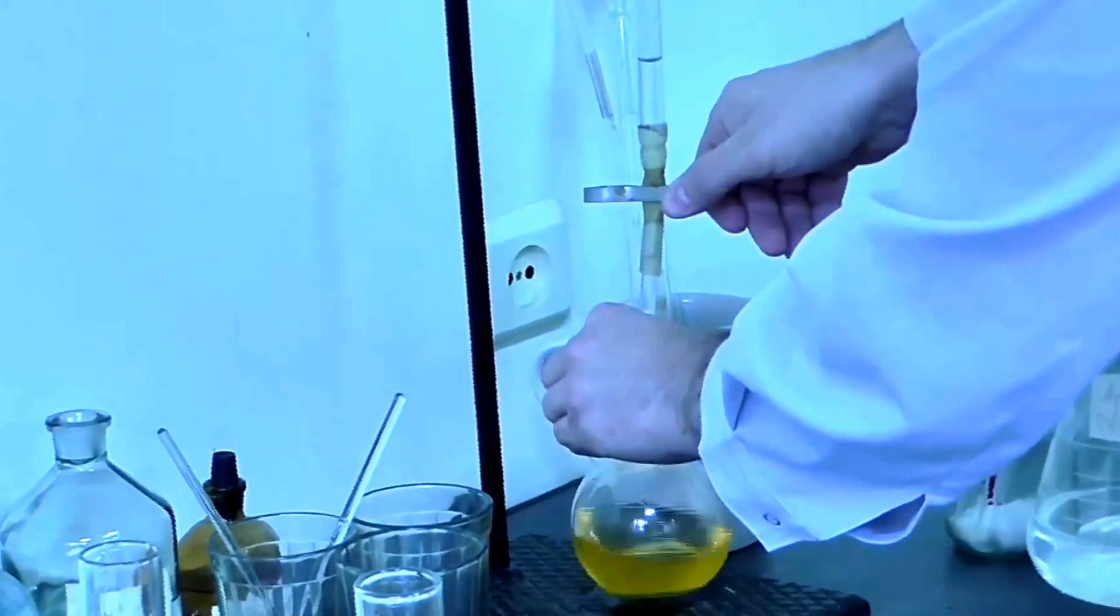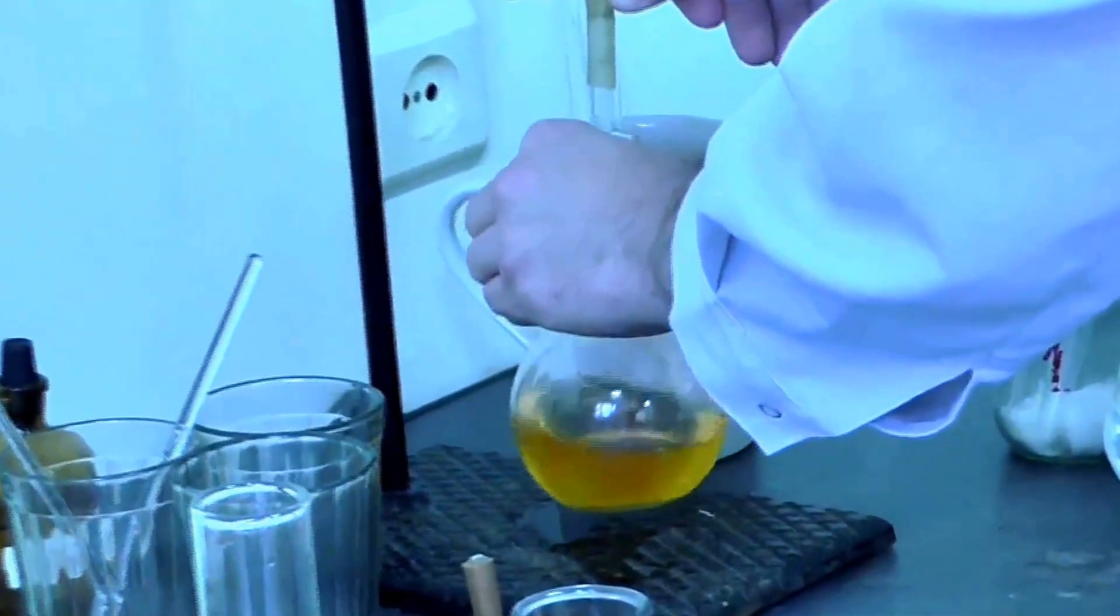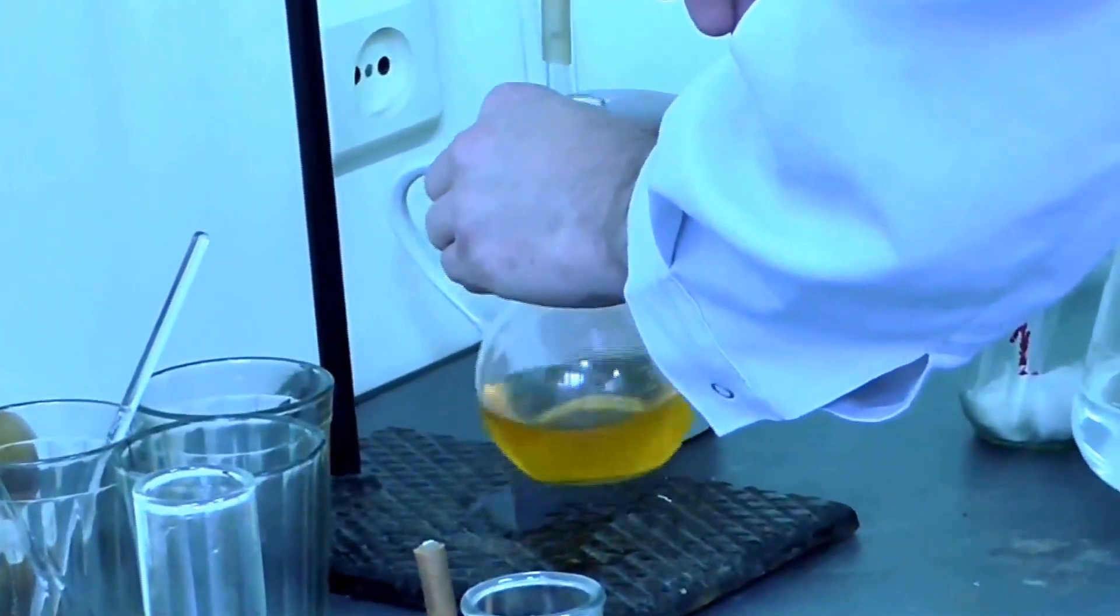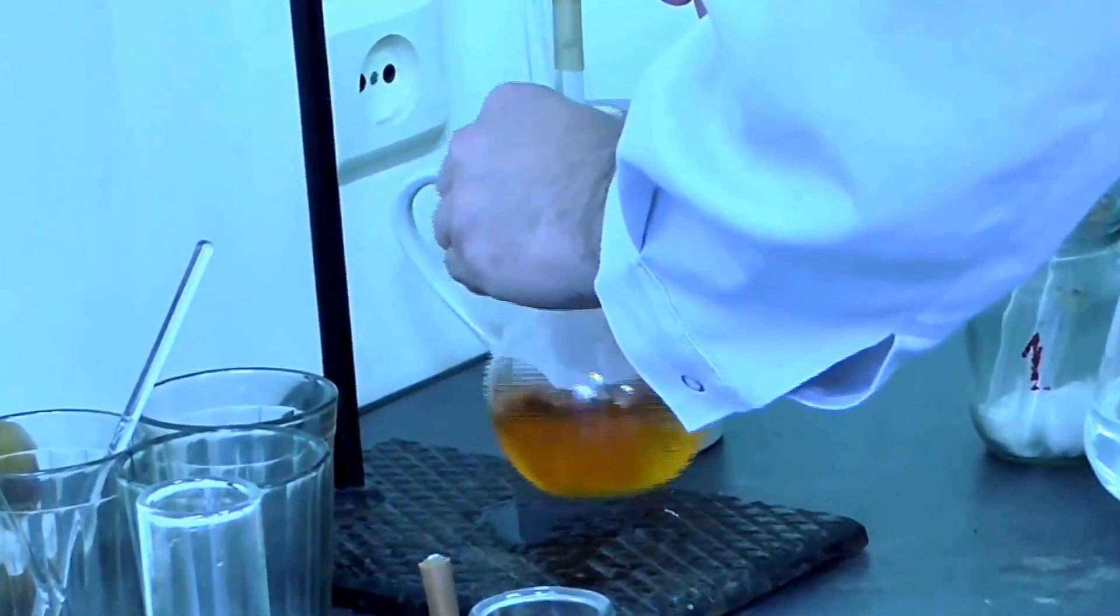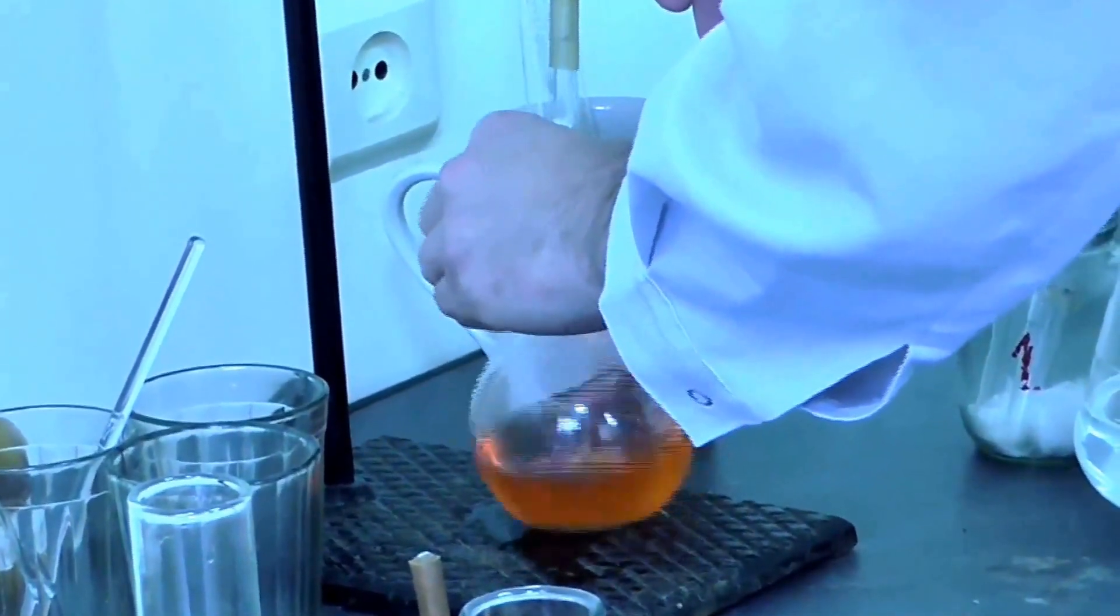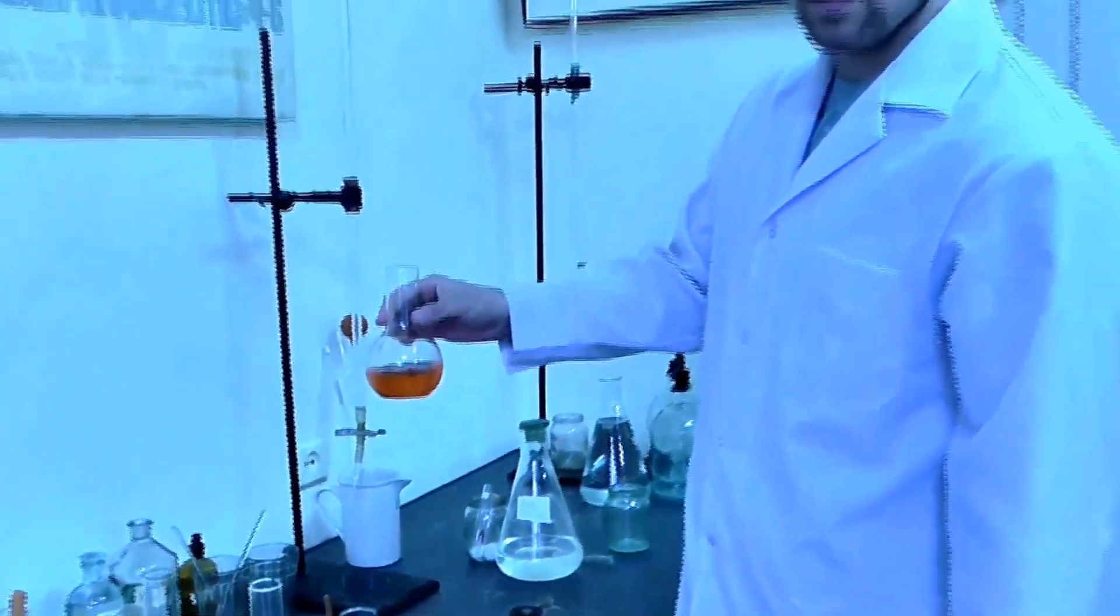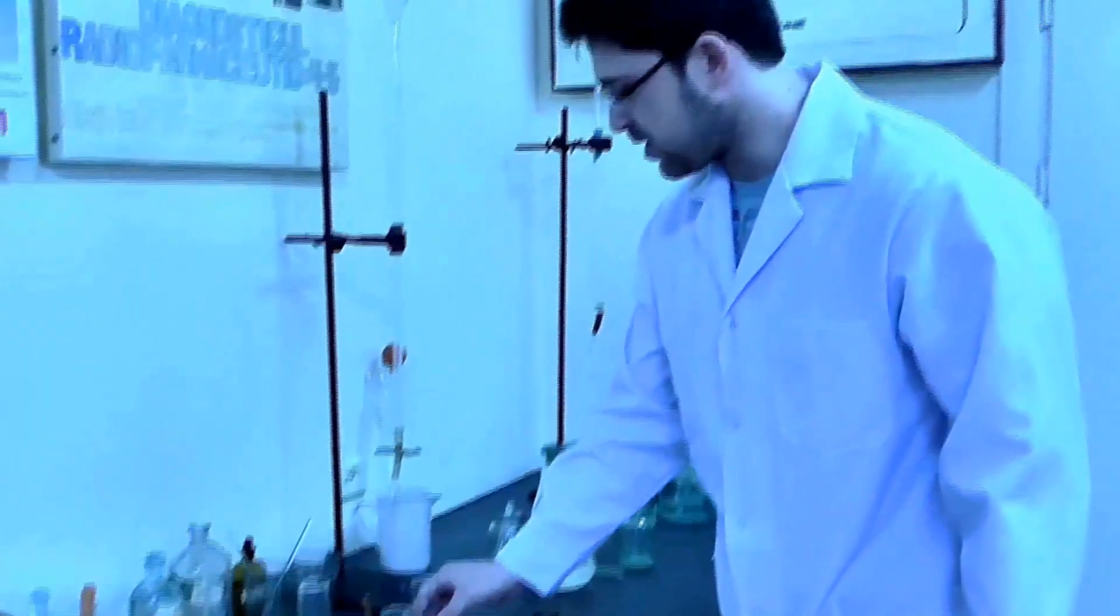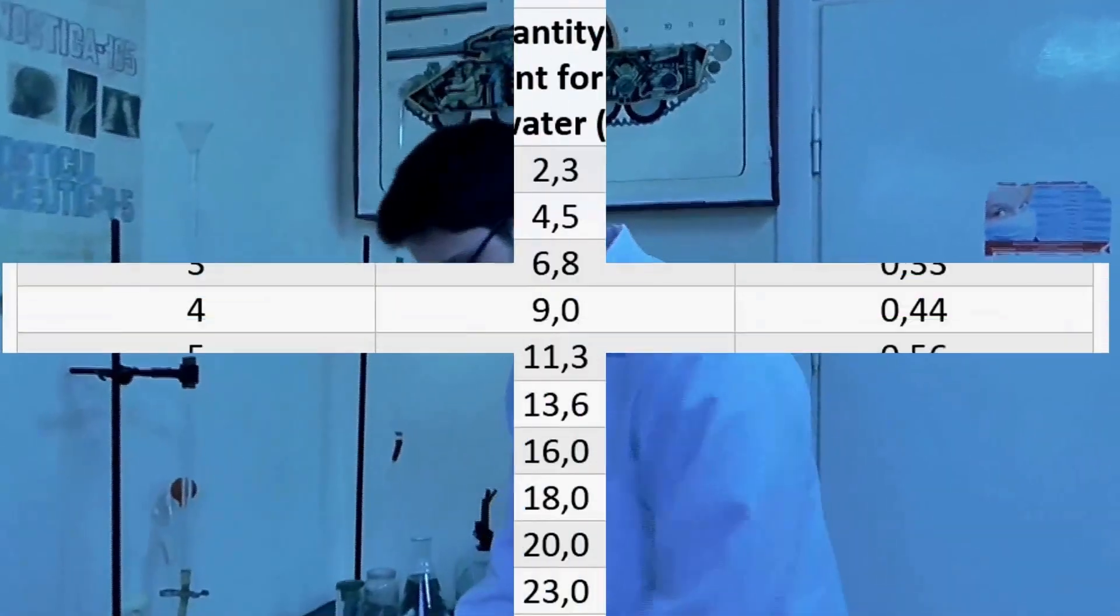And here we will add two milliliters of hydrochloric acid and now we'll be going to the table to see how much coagulant we need in order to purify the water.